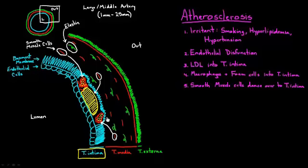And what they begin to do is make a fibrous cap. That's step six. Smooth muscle cells make a fibrous cap.